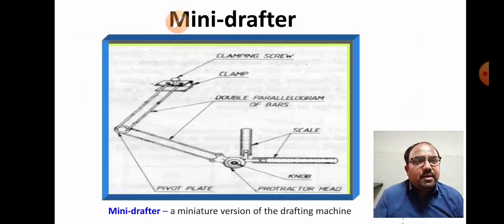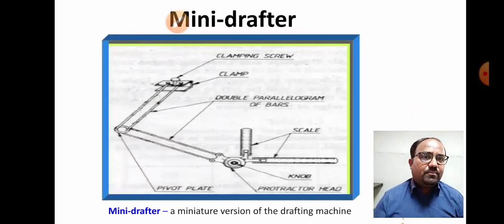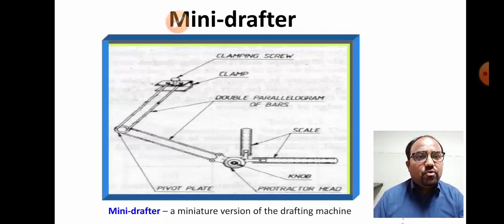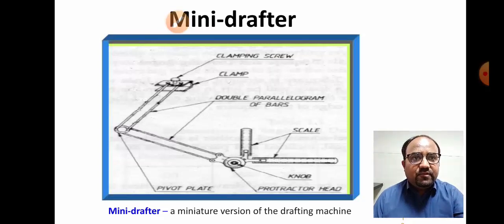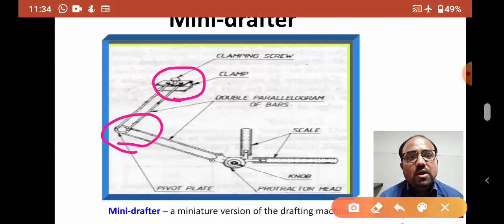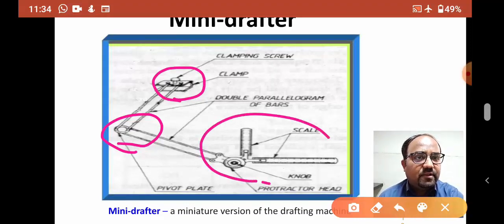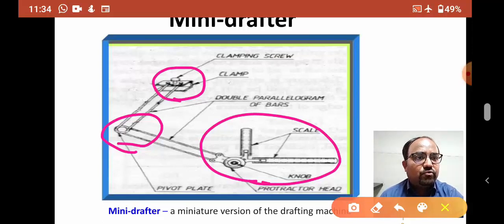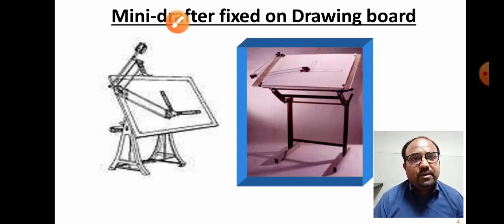The second instrument is the mini-drafter. We use it because it has two types of scales attached: one parallel and one perpendicular. The parallel scale is at 0 degrees. It is easily movable — this is the movable portion on the top of the drawing board. We can easily move this section and draw on the drawing sheet using the mini-drafter.